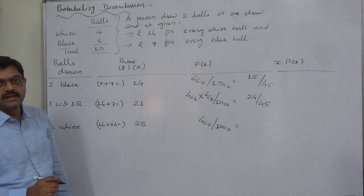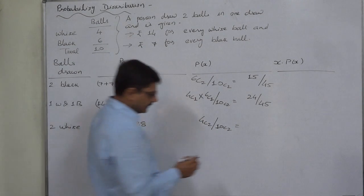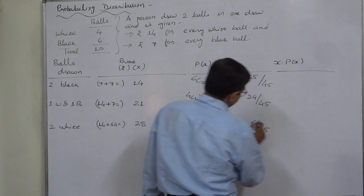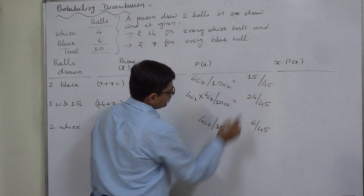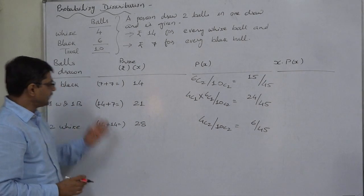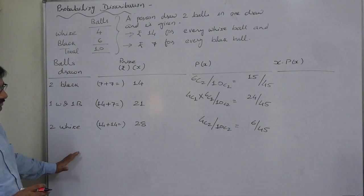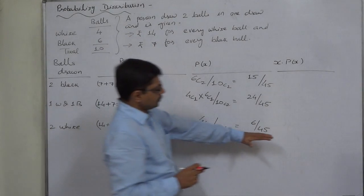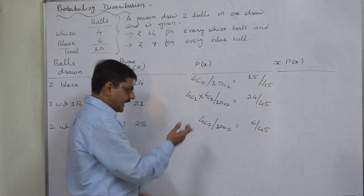So 6 by 45. 24 plus 6 is 30, plus 15 is 45. These are the three mutually exclusive and exhaustive cases. So the summation of their probabilities must be 1, and it is.